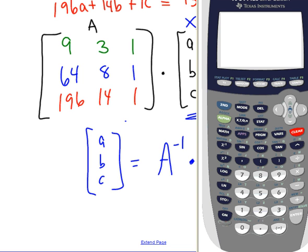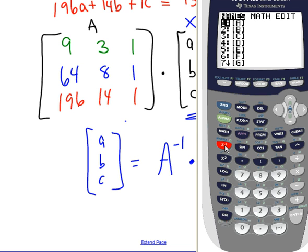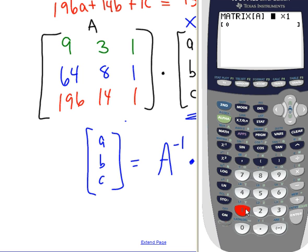So now let's go to our calculator and recall how we put these in. I go to second, x to the negative 1, so it says matrix. I'm going to arrow over to edit, and row by column. So if I look at matrix A, there are three rows, and there are three columns. And then I just put these in, 9, 3, 1, 64, 8, 1, 196, 14, and 1.